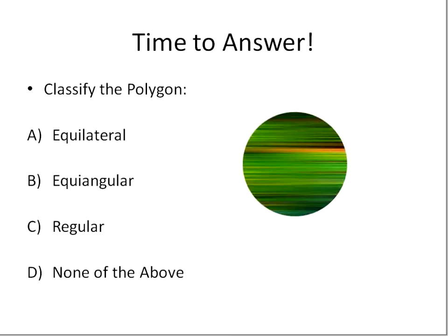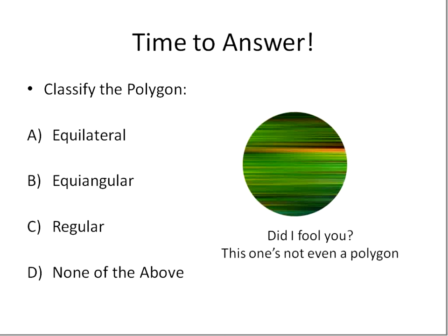Our final shape — we're going to classify this circle. Is it equilateral, equiangular, regular, or none of the above? This is definitely none of the above. This is not a polygon at all. Remember the rules: a polygon can't have curved edges, so this circle is not even a polygon, let alone equilateral or regular. We select none of the above for the circle. Hopefully that lesson was helpful — remember the properties of what a polygon is and how to classify them by both angle and side measurement.